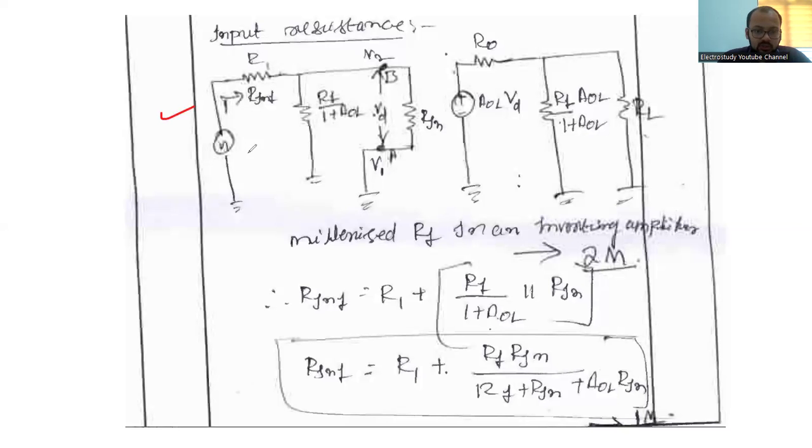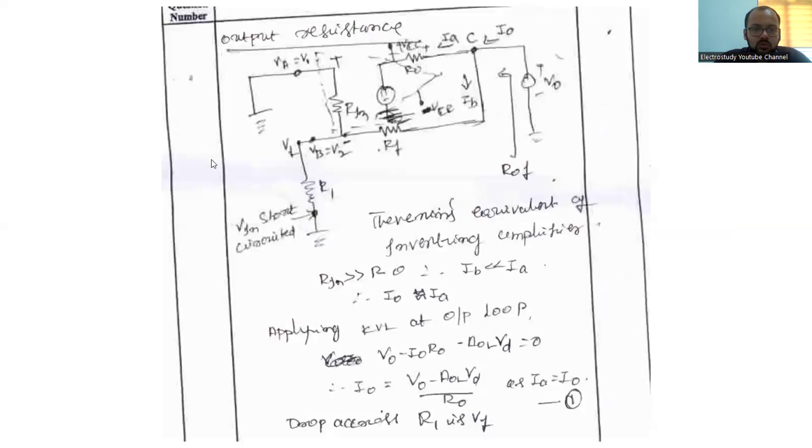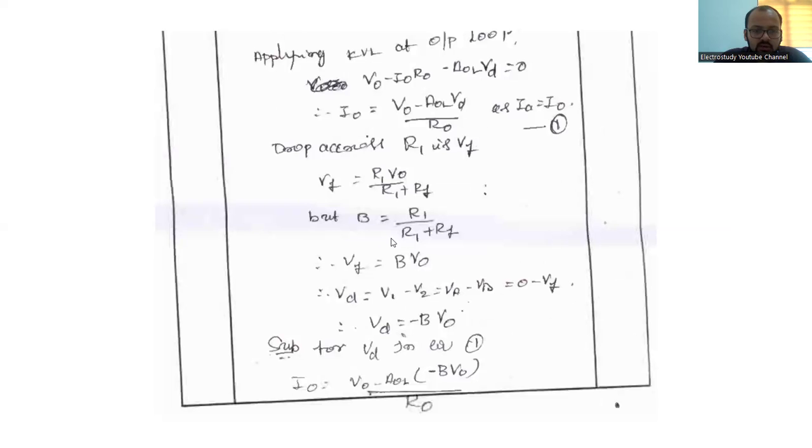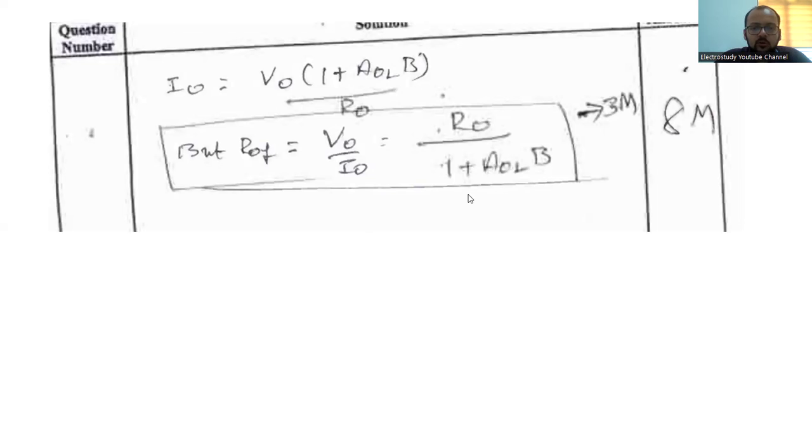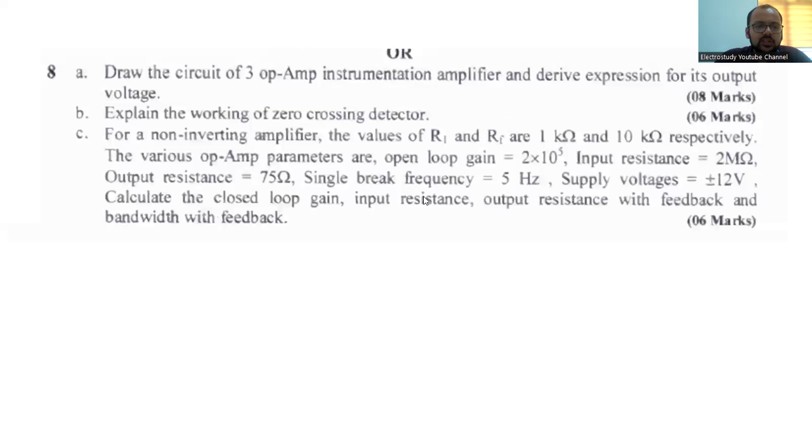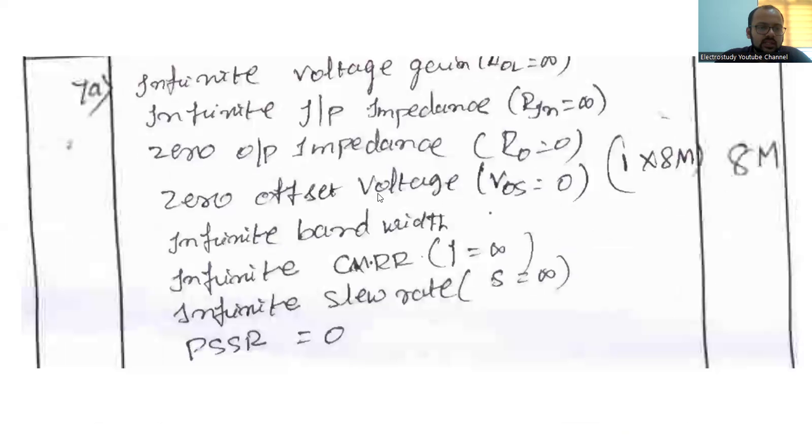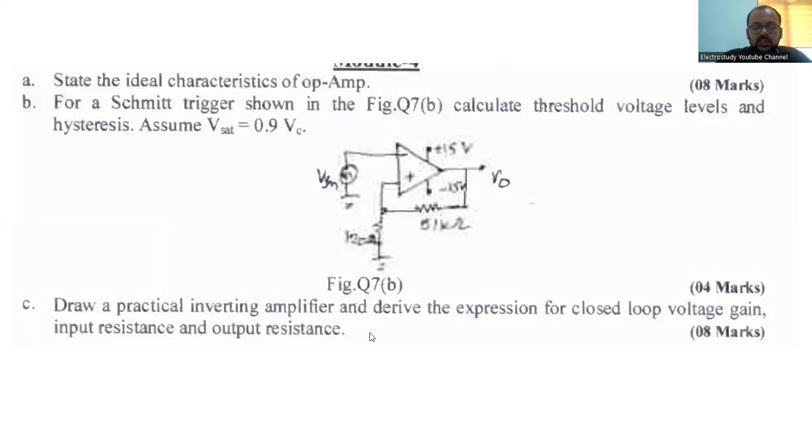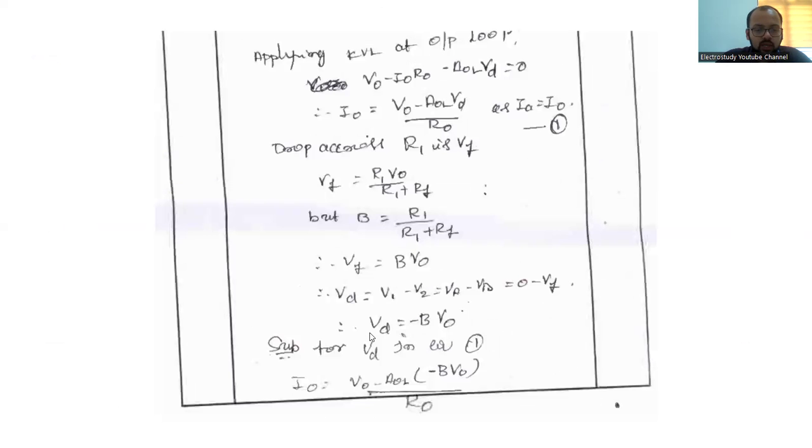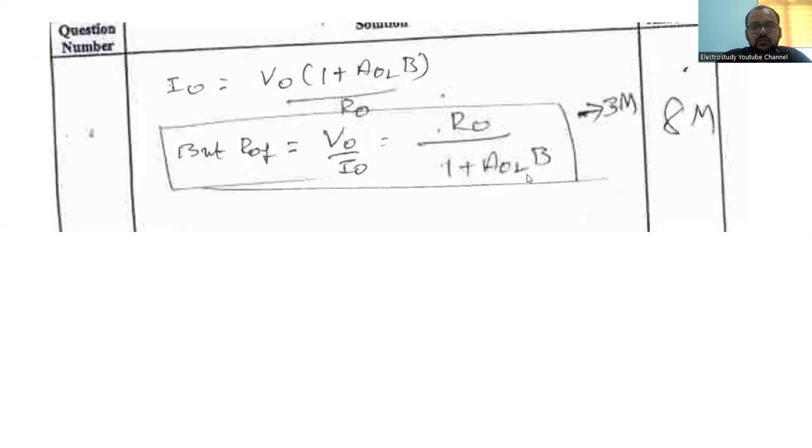Draw the equivalent circuit. Ultimately, you will be getting the value RIN, that is equal to R1 plus RF Rn divided by RF plus Rn. You will be getting this expression. Apply certain conditions. Like this, you can apply certain conditions and proceed further. You should get like R0 by 1 plus AOL into B. If you found a simple derivation, that also you can follow. This is one method which is adopted here. Look at this: V0 by I0 equal to R0 by 1 plus AOL into B. This is the ultimate expression for inverting amplifier.